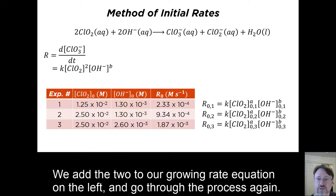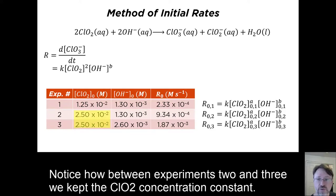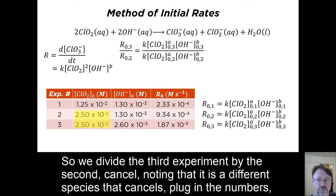We add that 2 to our growing rate equation on the left and go through the process again. Notice how between experiments 2 and 3 we kept the ClO2 concentration constant. So we divide the third experiment by the second, cancel, noting that it is the different species that cancels.